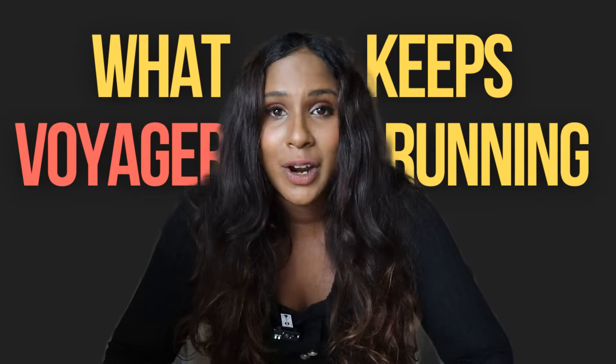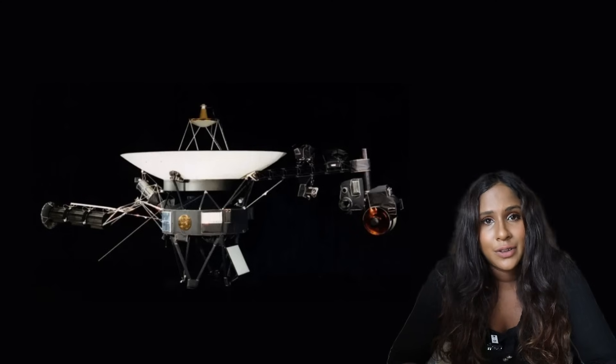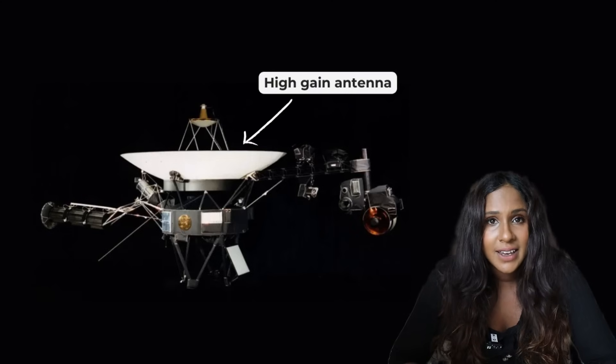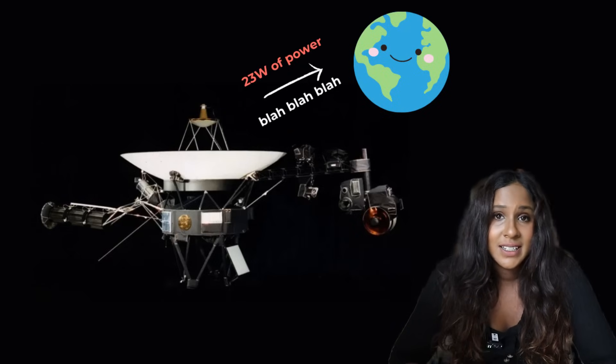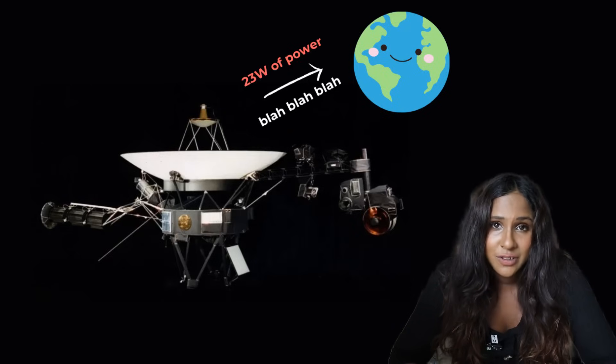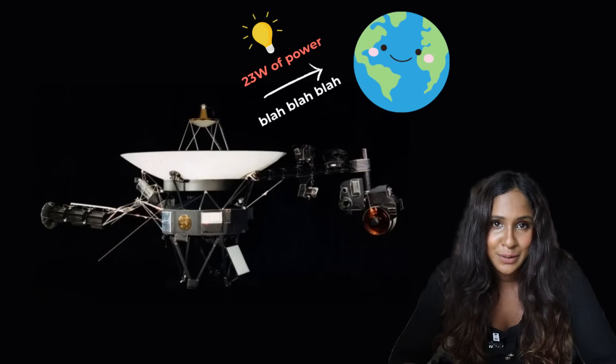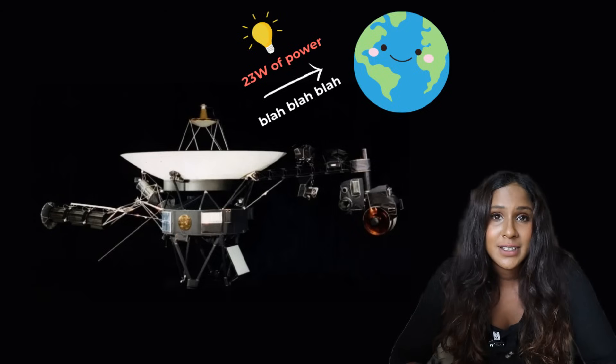And what keeps Voyager 1 running? Well, firstly, you see the big round dish. That's high-gain antenna. It's Voyager's only way to talk to Earth. It sends signals using just 23 watts of power. That's about the same as a fridge light bulb. Yet NASA can actually pick up these signals from billions of miles away.